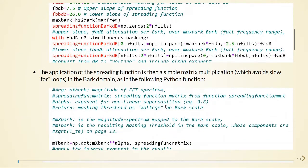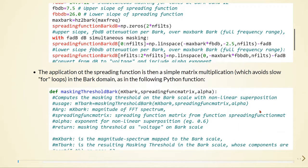We also have this masking threshold that returns the masking threshold as a voltage on the Bark scale. Here we see that the application of the spreading function is a simple matrix multiplication, which avoids slow for loops.